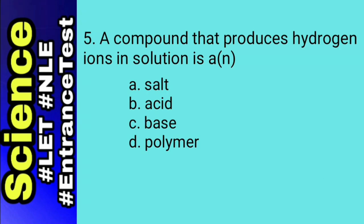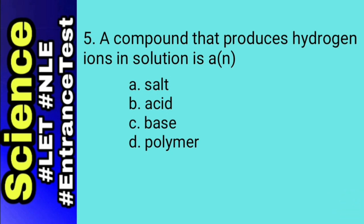For this number, let's do elimination. It pertains to chains of molecules. Letter A, salt, pertains to any chemical compound formed from the reaction of an acid to a base, so letter A will be eliminated. We are left with B and C. Base is a compound that produces hydroxide, while acid is a compound that produces hydrogen ions. That's why the answer for number 5 is letter B, acid.